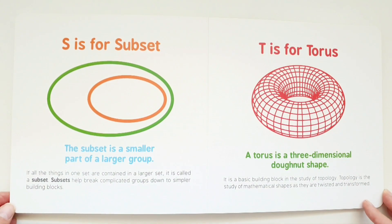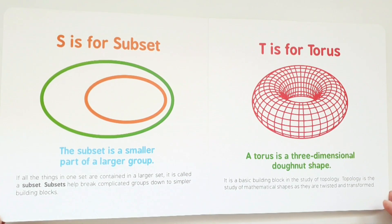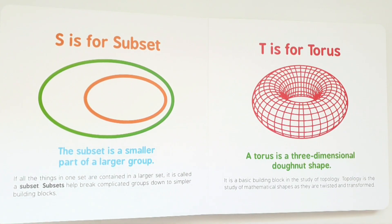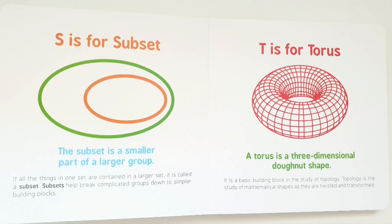S is for subset. A subset is a smaller part of a larger group. If all the things in one set are contained in a larger set, it is called a subset. Subsets help break complicated groups down to simpler building blocks.